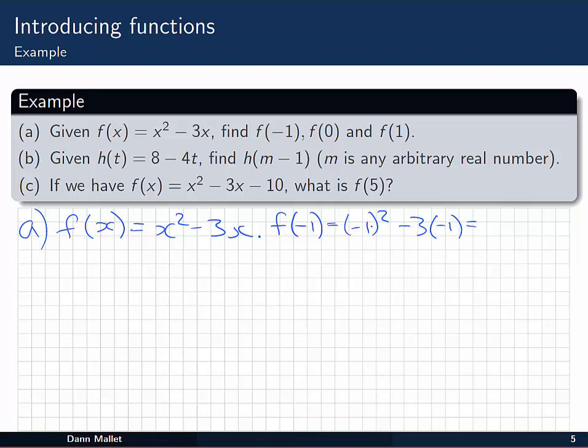Okay, and that's going to be 1 plus 3, or 4, so we can write that straight away. f of 0, similarly we substitute x equals 0 and get 0 minus 0, so that one's easy.